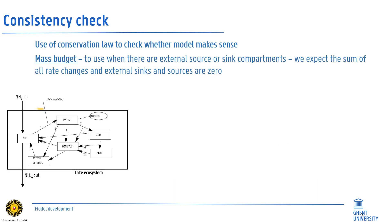However, in systems where these external flows are present, like in our ecosystem example, we expect the sum of all the rate changes to equalize the sum of the external sinks and sources. Or alternatively, the mass budget of all the rate changes and these sinks and sources should be zero.